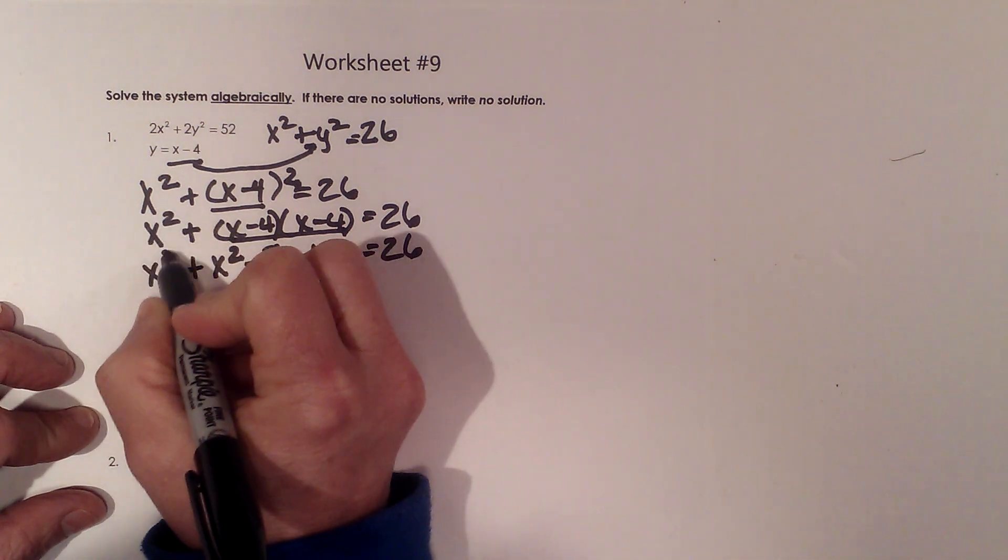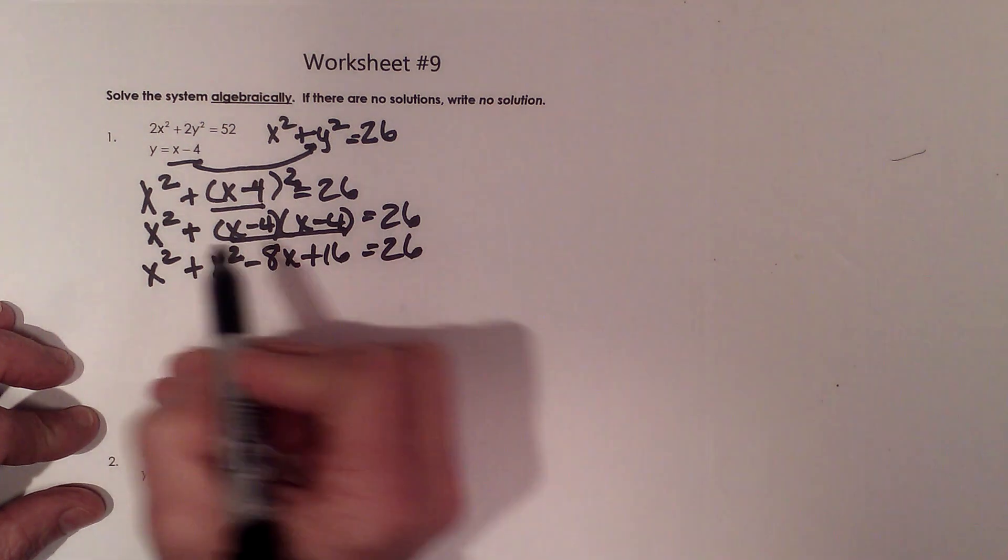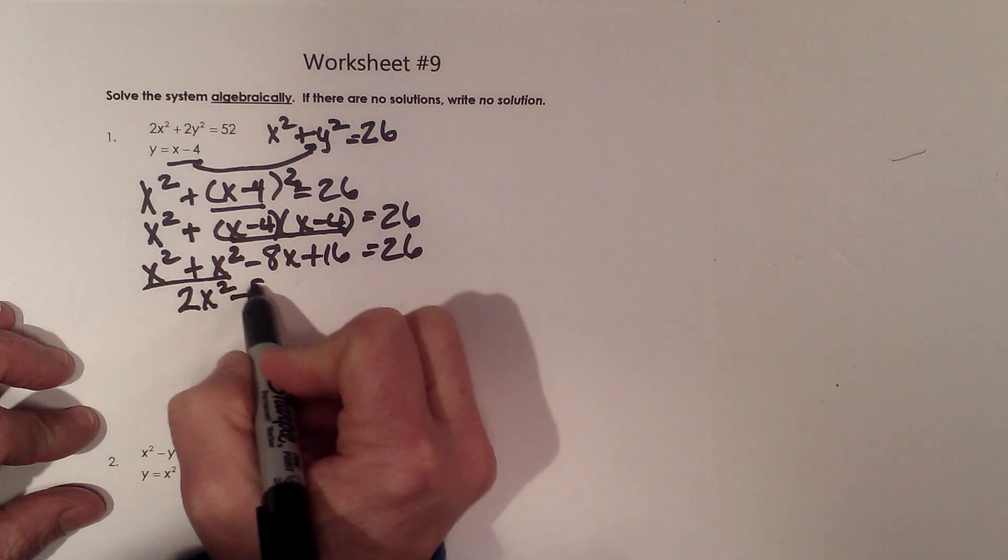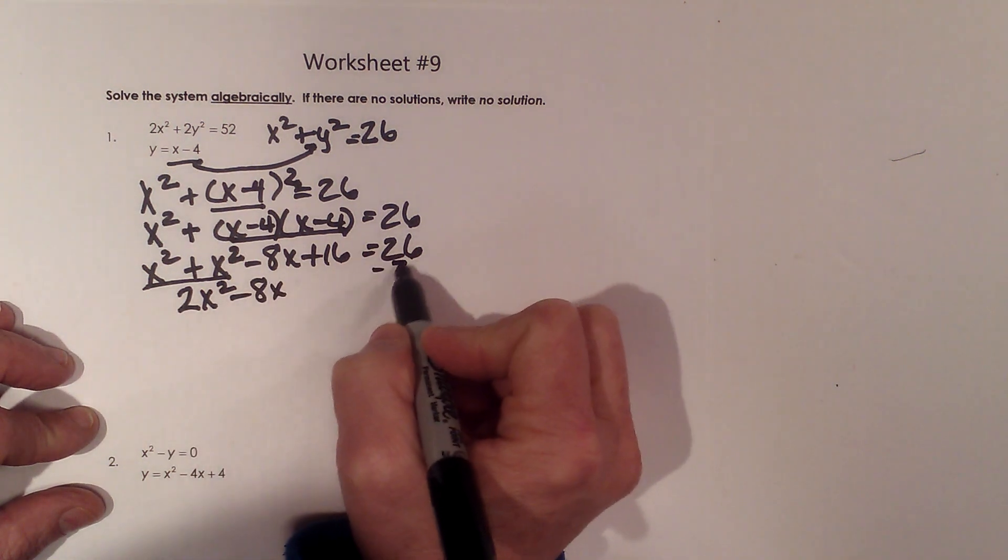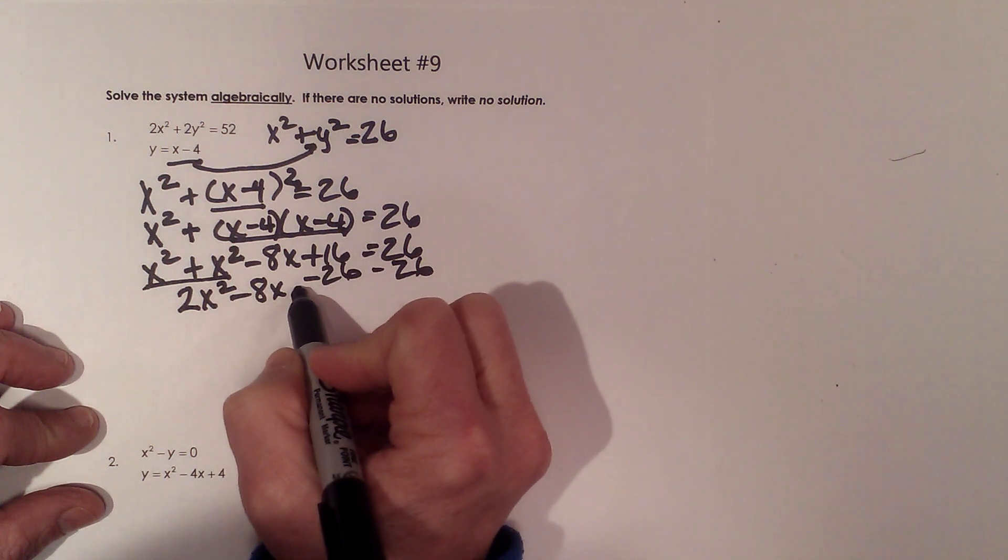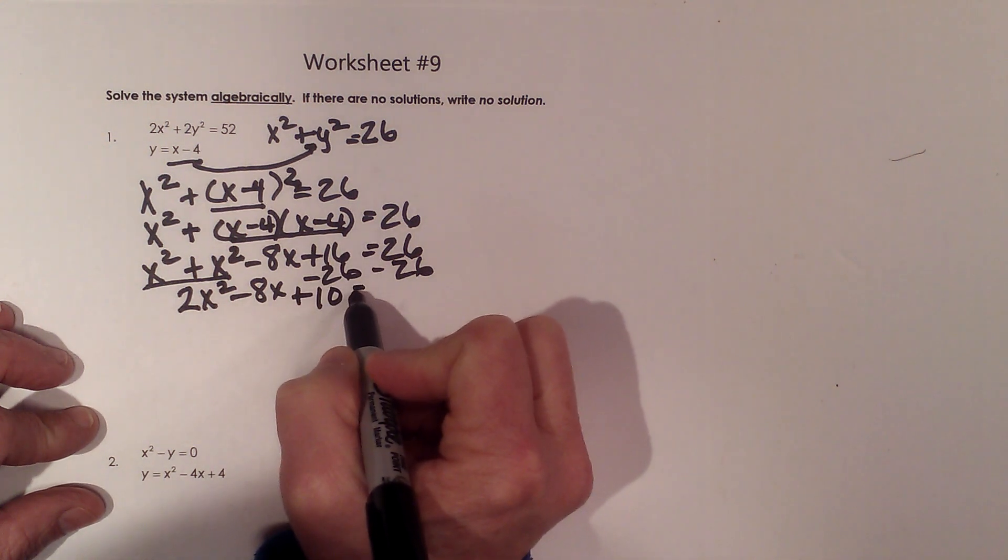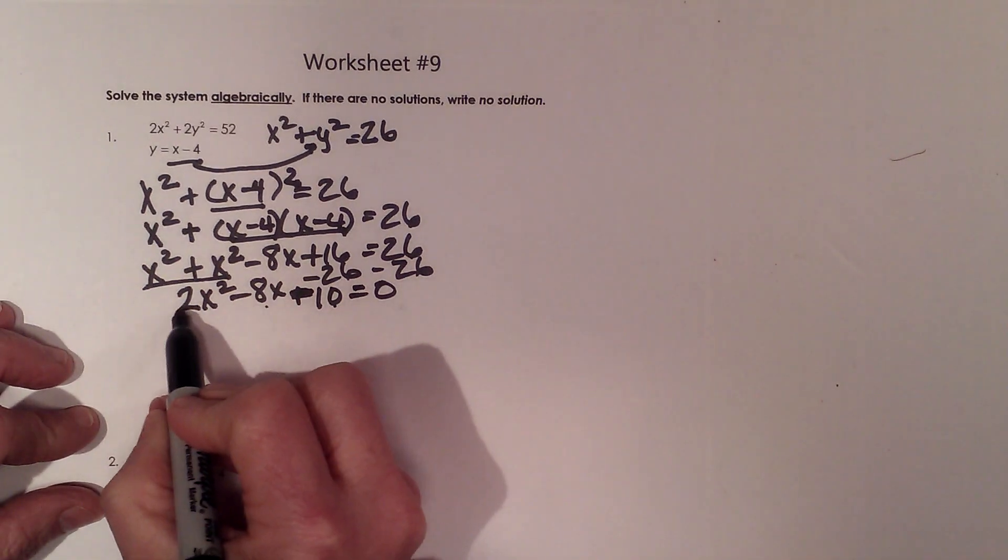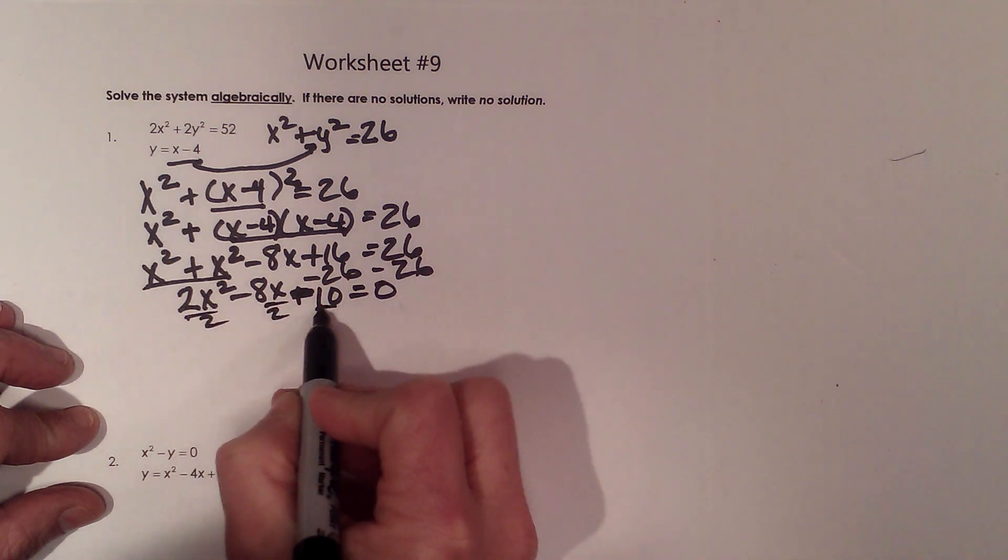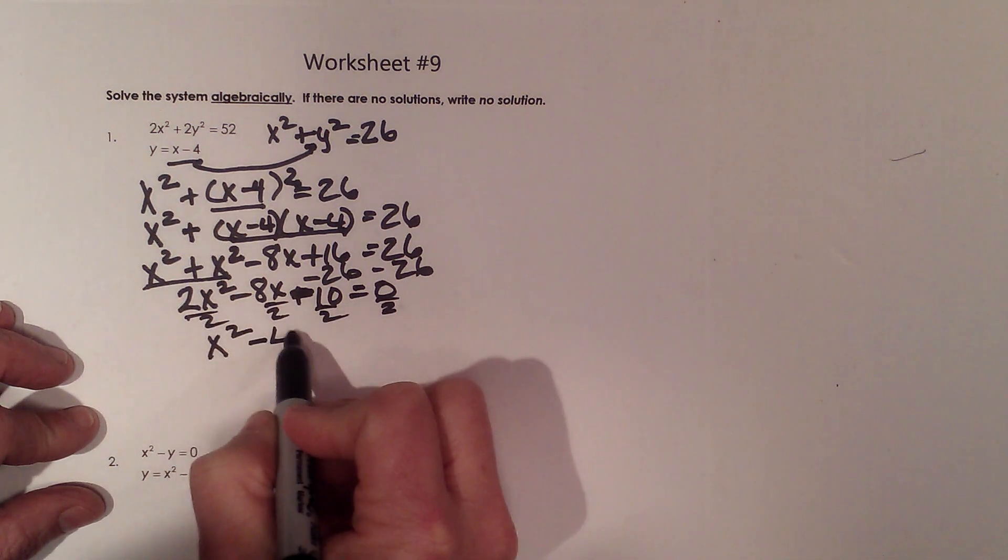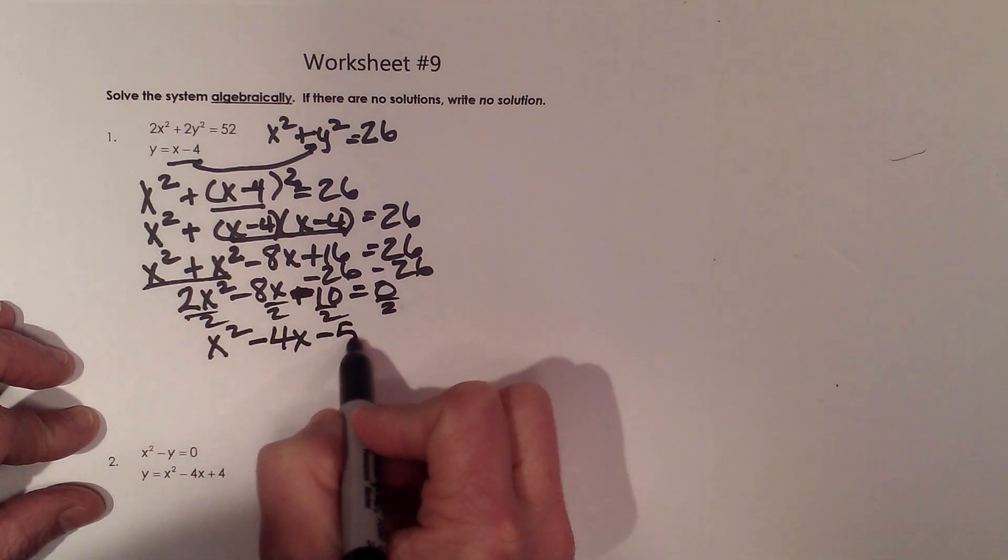Bring down the x². Now let's combine like terms. I'm going to add those together and get 2x² - 8x, and I'm going to bring my constant of 26 over. So that's going to give me -10 = 0. Now again, I've got a 2. This is divisible by 2, so let's take a 2 out of every term. That's going to give me x² - 4x - 5 = 0.